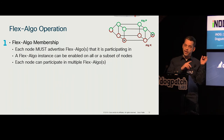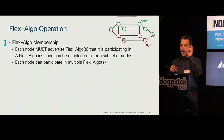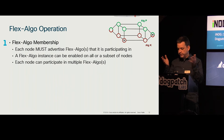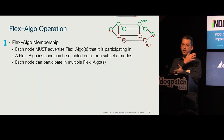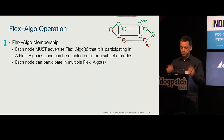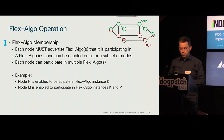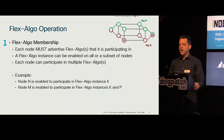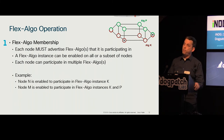To recap: we're not talking about different IGP processes. It's one IGP process running the entire topology of, say, ten routers — with two Flex Algo instances K and P operating within it. N belongs to Flex Algo K; M belongs to both Flex Algo K and P.